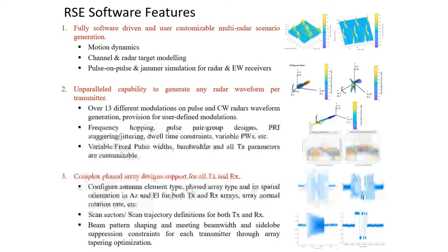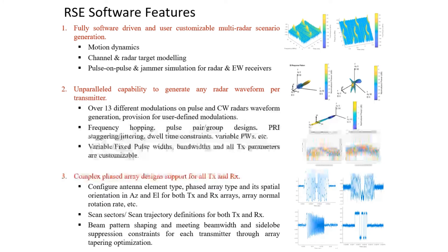The RSE software provides a comprehensive waveform design suite comprising 13 different types of modulations on pulse in addition to user-defined modulations. The standard library includes linear FMs, non-linear FMs, polyphase codes, pseudo-random codes, chaotic map-based codes, noise radar waveforms, standard Barker codes, Frank codes, Costas codes, and more.